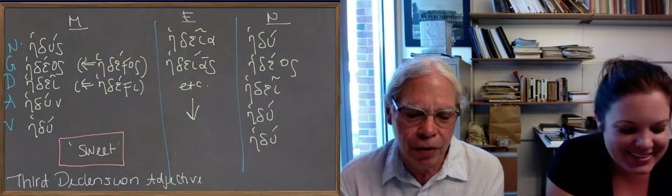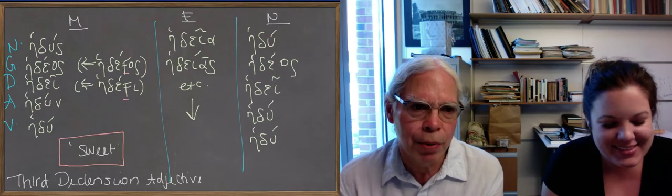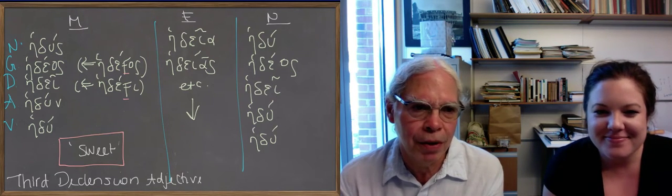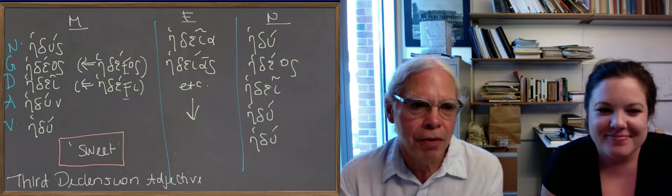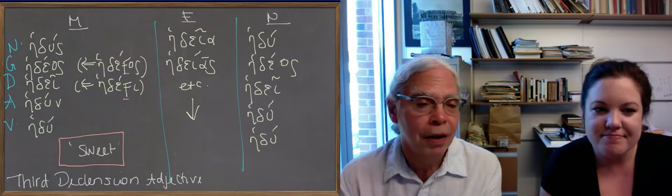So remember if the suffix after the u or the w begins with a vowel, it becomes a w and then it disappears. So here are the forms of hedus, and it represents a really large class of words.